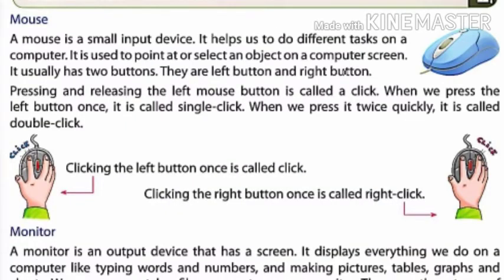Now we are going to study about some other hardware devices. Mouse is an input device. A mouse is a small input device. It helps us to do different tasks on the screen on a computer. It is used to point at or select an object on a computer screen. It usually has two buttons — left button and right button.